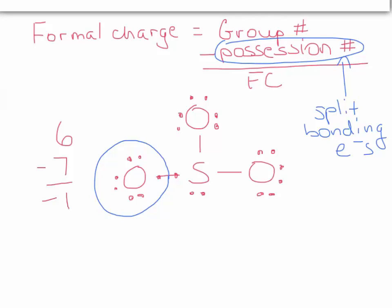How about this oxygen up top? Once again, I will draw the electrons and draw the circle. It owns all the lone pair and half the bond. So, oxygen's in group six. How many are in the circle? One, two, three, four, five, six, seven. There are seven in the circle. So the formal charge is again minus one for this oxygen.